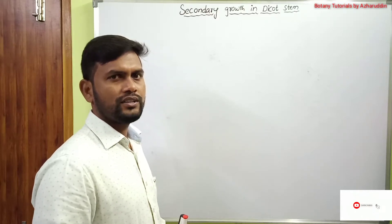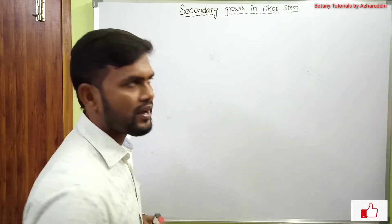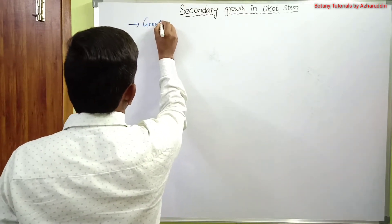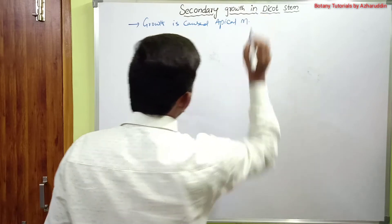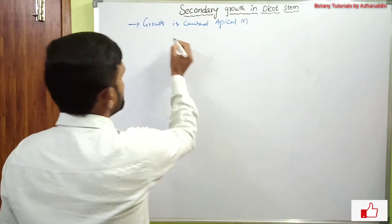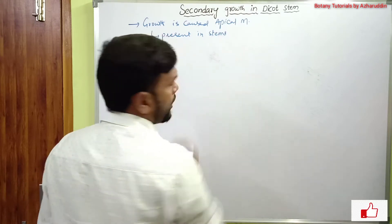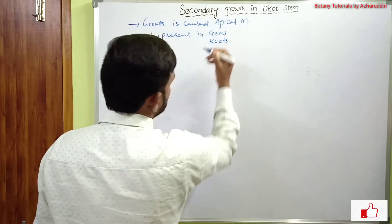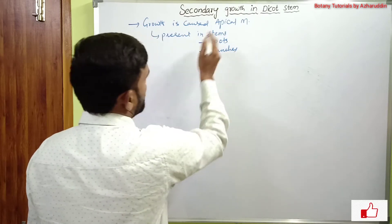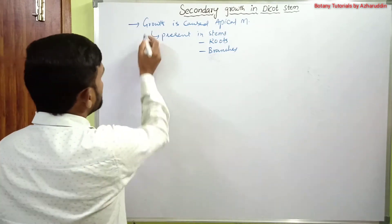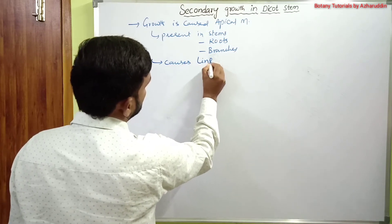Hello everyone. In this session I will take up another topic: secondary growth in dicot stems. Growth is caused by apical meristem, which is present in stems, root apices, and branch apices. This apical meristem causes linear growth.